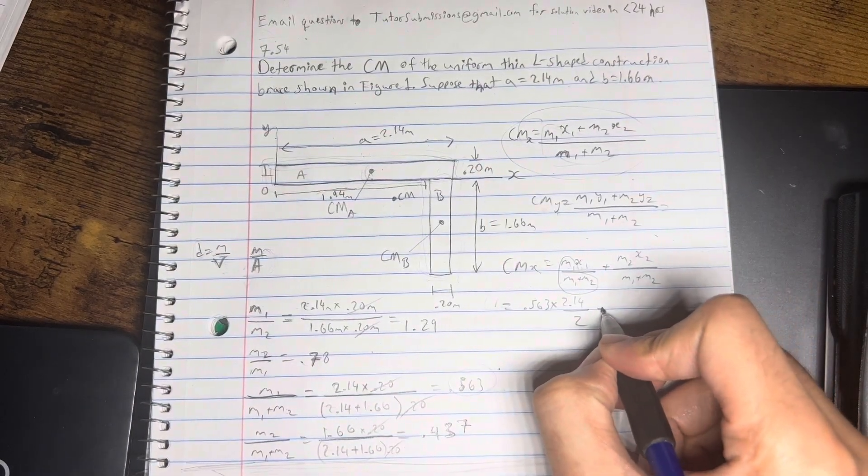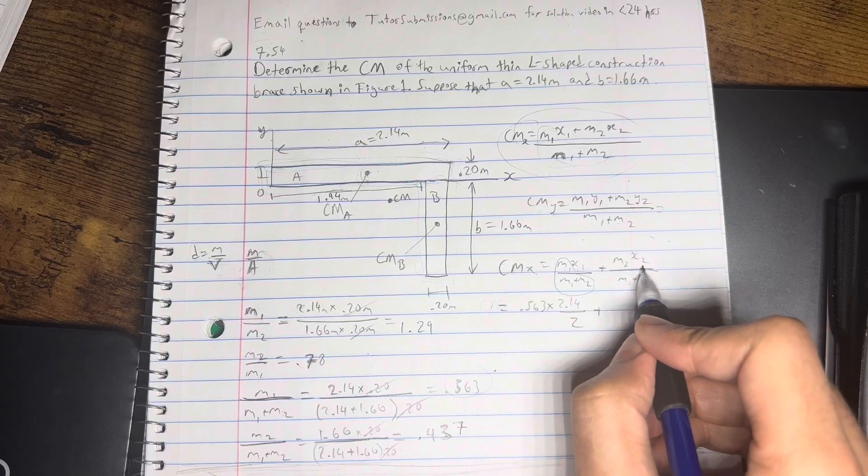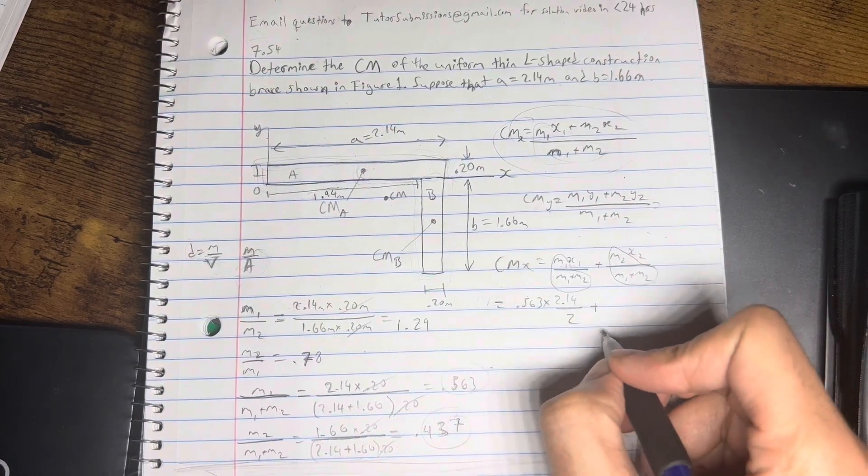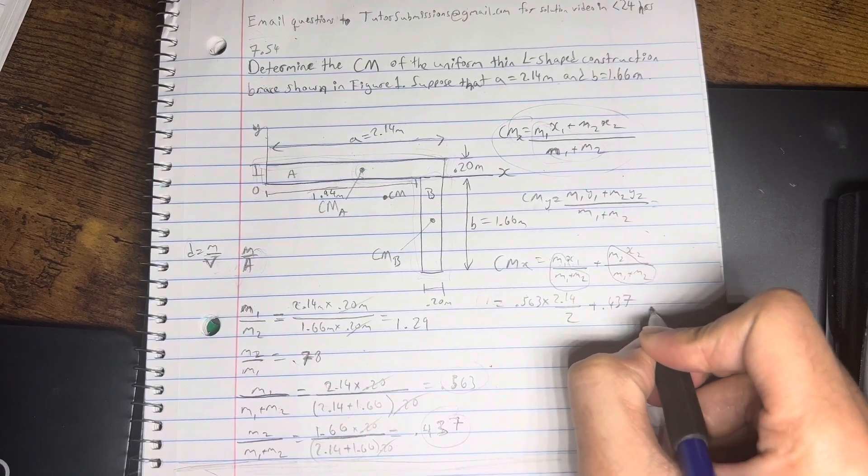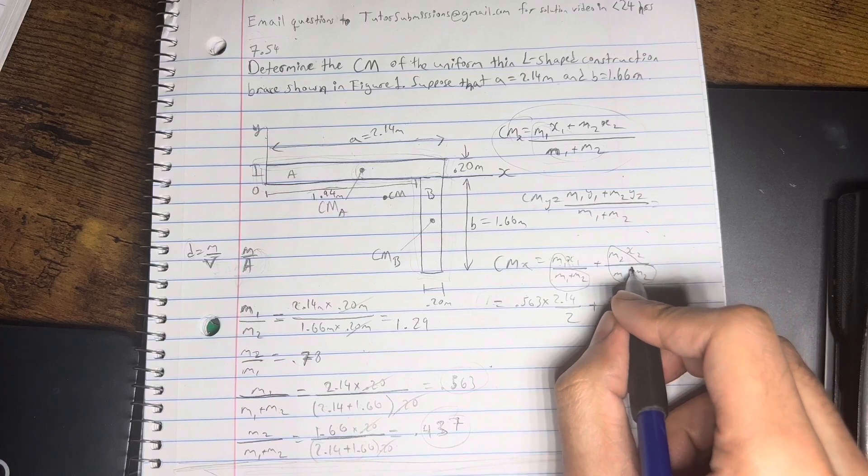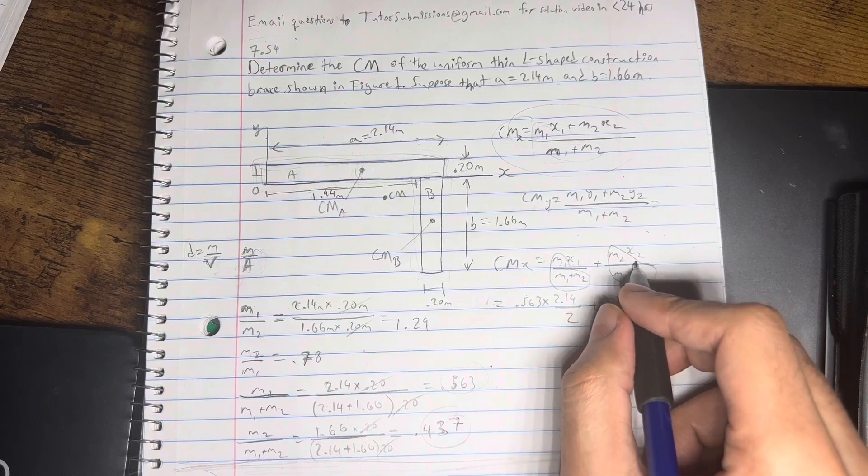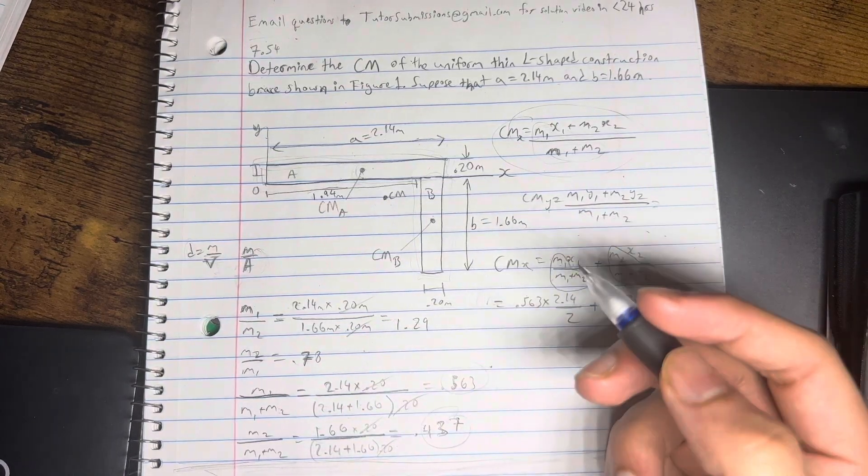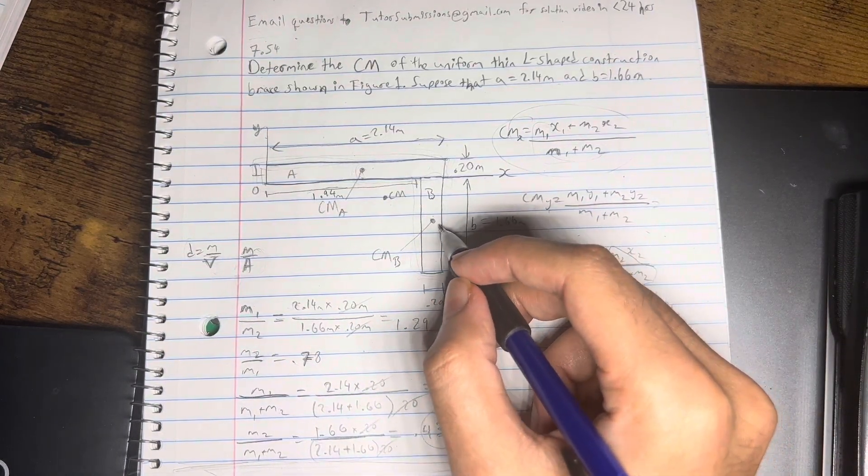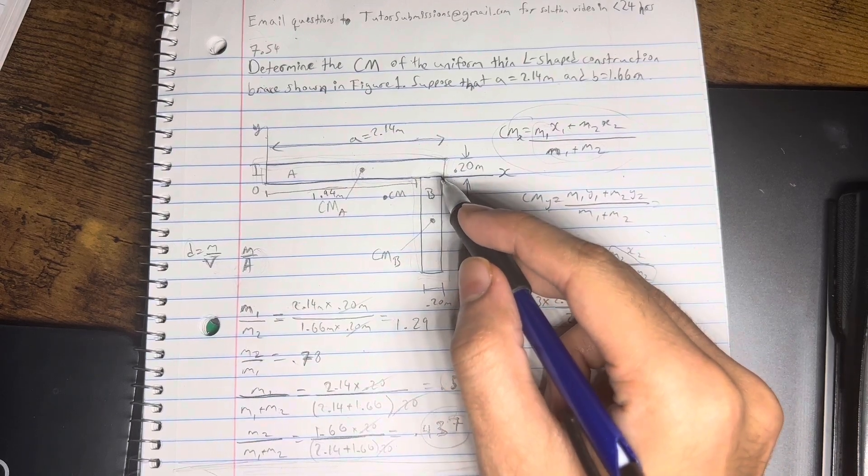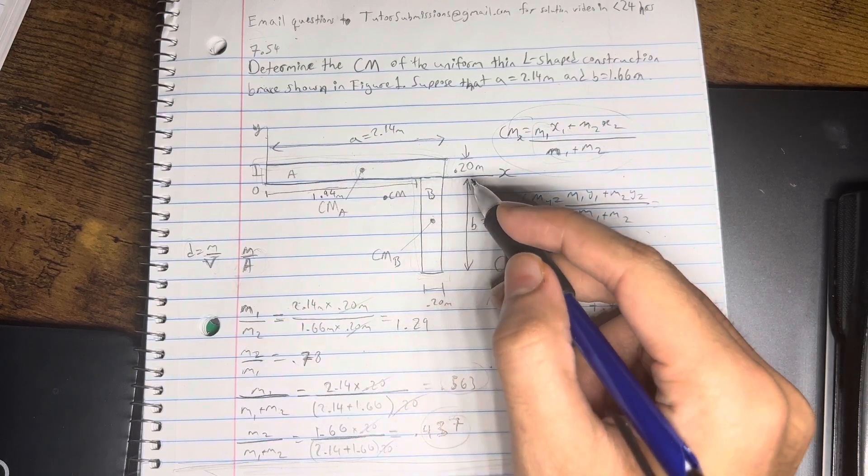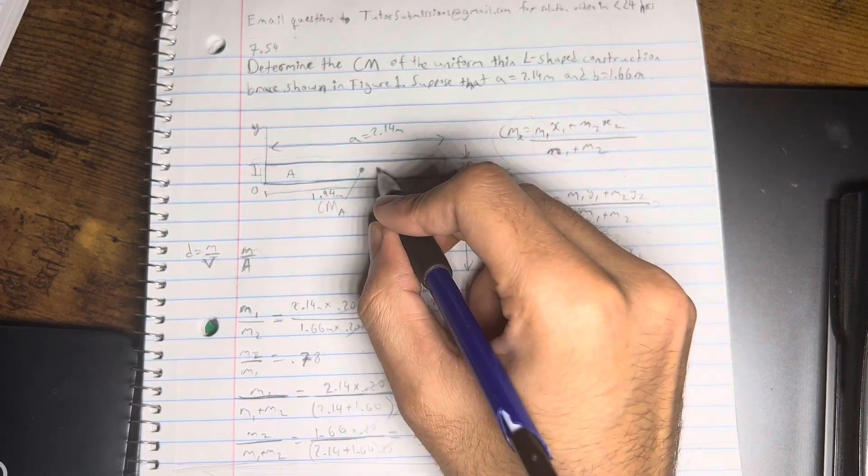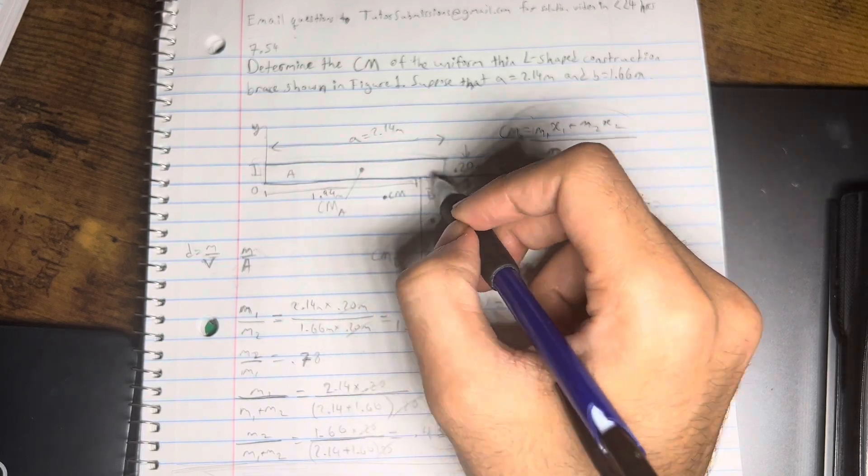And then now we're going to add that with, same thing, I'm going to substitute m2 over m1 plus m2 with this value here. So, we're going to say 0.437 times. And then, so now, the x-coordinate, when you find the x-coordinate for the second block, it's important to be careful here, right? Because a lot of people make mistakes when it comes to this part, especially because they forget to add the length of this one. So, what I mean by that is, if we have 0 over here for x, the center of mass of this is over here.